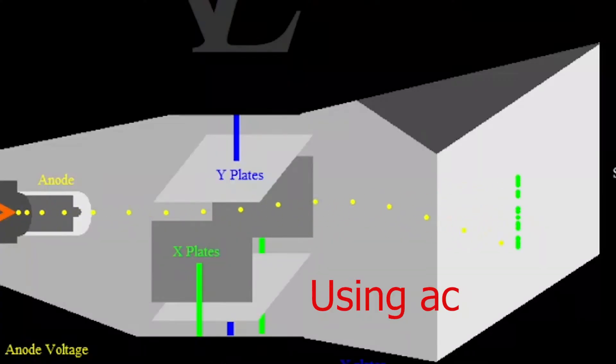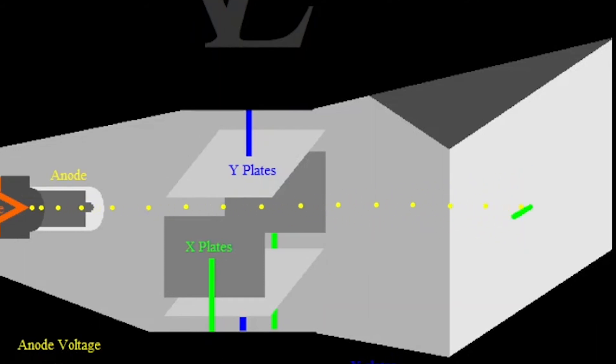If an alternating current is used instead of direct current, the spot moves up and down. Horizontal deflection is caused by X plates. The X plates are connected to a special circuit called a time-based circuit.